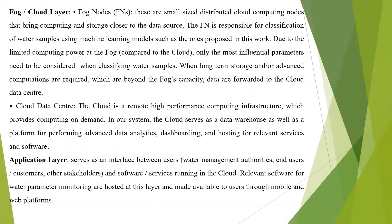This was the block diagram. The next layer is the fog or cloud layer. Fog nodes are small-sized distributed cloud computing nodes that bring computing and storage closer to the data source. The fog node is responsible for classification of water samples using machine learning models. Due to the limited computing power at the fog compared to the cloud, only the most influential parameters need to be considered when classifying water samples. When long-term storage or advanced computations are required beyond the fog's capacity, data are forwarded to the cloud's data center.